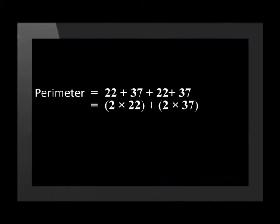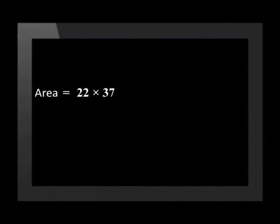We can change this to 2 times 22 plus 2 times 37. This gives us 44 plus 74, which is 118 centimeters. The area is found by multiplying the length by the breadth. So we'll multiply 22 by 37 to find that the area is 814 centimeters squared.